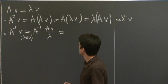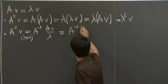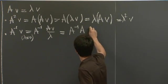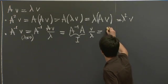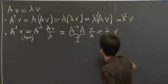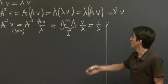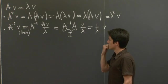So if we just then take out the A and combine it with A inverse, this is the identity, and so we get 1 over lambda V. So V is also an eigenvector for A inverse, with eigenvalue the reciprocal of lambda.